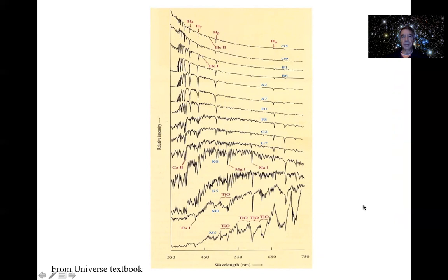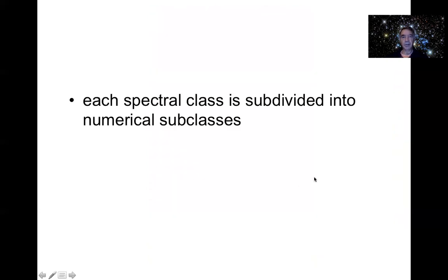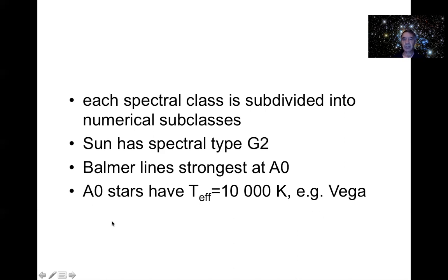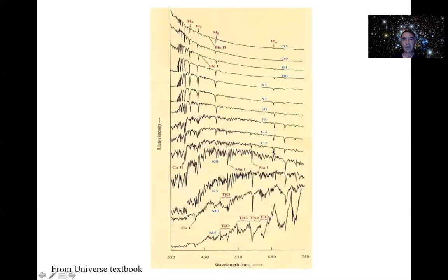So that's the patterns in the spectra and the idea that it is a temperature sequence. As well as the letters, you've got numbers. Each subclass, like the A stars, is divided into up to 10 numerical subclasses, so you've got A0, A1, A2, etc., until you get up to the F stars, and then you start again with F0, F1, F2. Just to give you some orientation, the Sun has a spectral type of G2, and the Balmer lines are strongest at A0. That's a bit like your zero point for spectra classification - you always start from there. A naught stars have an effective temperature of around about 10,000 Kelvin. Another one we've met already - the star Vega is an A naught star, so that's its spectrum type. If we go back to here, you can see a G2 star. This is very similar to the spectrum of the Sun.